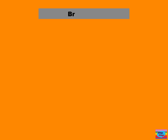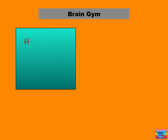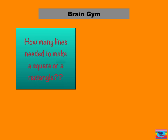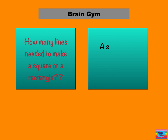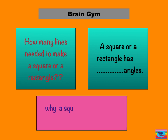Time for a brain gem. How many lines are needed to make a square or a rectangle? A square or a rectangle has four angles. Why do a square and a rectangle not look the same?